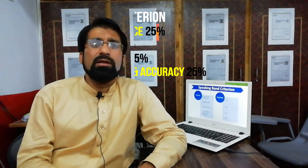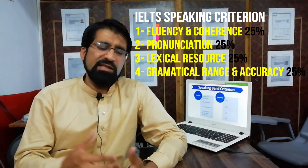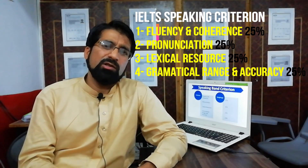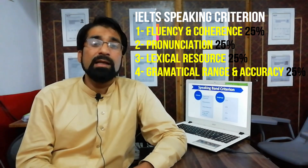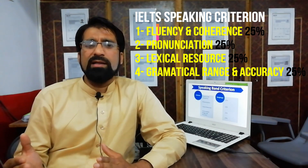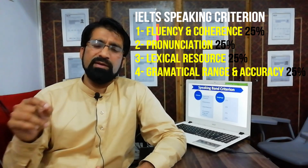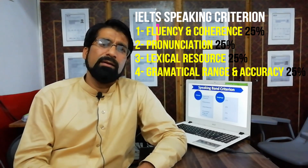All four criteria carry the same weightage — 25 percent each. Fluency and coherence accounts for 25 percent of your bands, pronunciation accounts for 25 percent, and the same applies to lexical resource and grammatical range and accuracy.